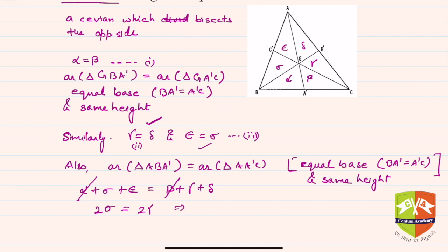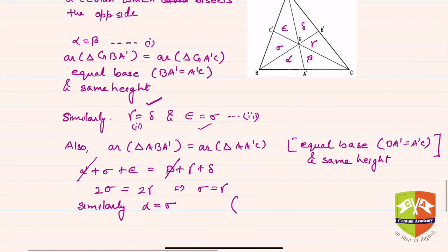So sigma equals gamma. Similarly, you can prove that alpha equals sigma. If you write epsilon plus gamma plus delta equals sigma plus alpha plus beta, using the same reasoning, alpha and sigma are the same, and gamma and delta are also the same.